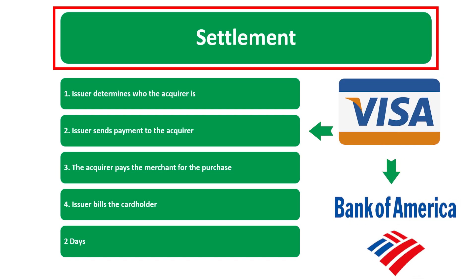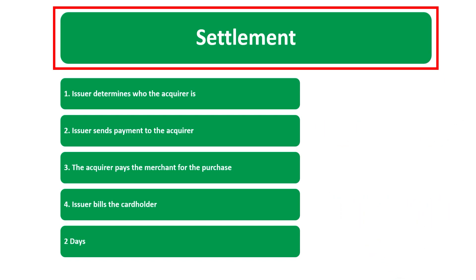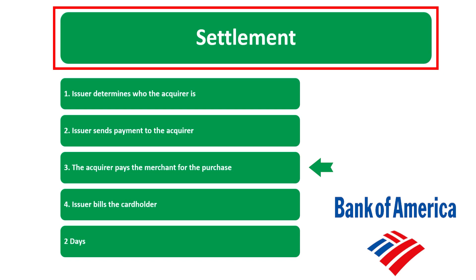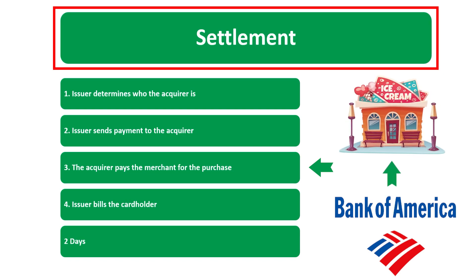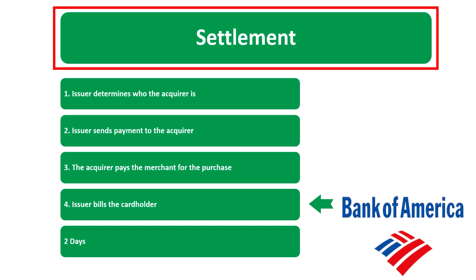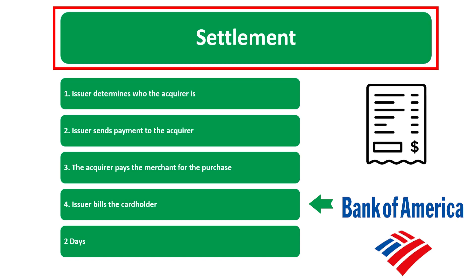Step number two: the issuer sends payment to the acquirer — your bank pays the bank of the merchant. Step number three: the acquirer pays the merchant for the purchase — the bank pays that merchant. Step number four: the issuer — your bank — bills you, charges you, and sends you a bill.